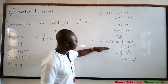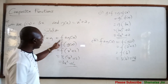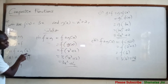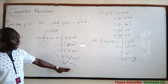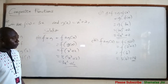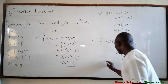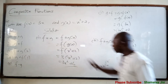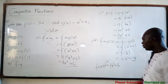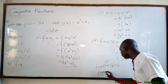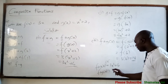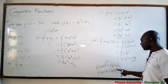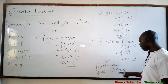Another way to do this: since you have already found f of g of x equals 3x squared plus 6, to find f of g of 2, it means x equals 2. So you just substitute 2 wherever you see x: 3 times 2 squared plus 6 = 3 times 4 plus 6 = 12 plus 6 = 18. You can do it either way.